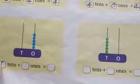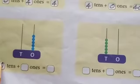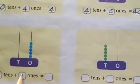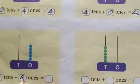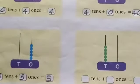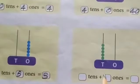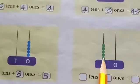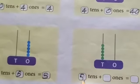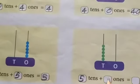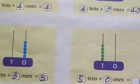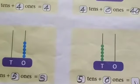Here, zero tens and five ones. Five ones is equal to five only. Here, five tens and zero ones. Five tens means fifty.